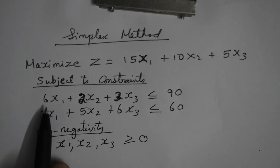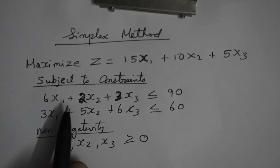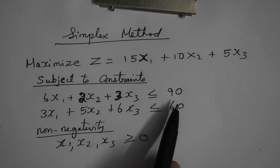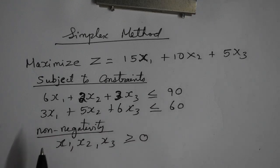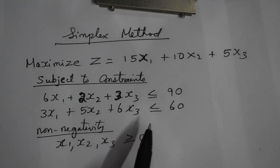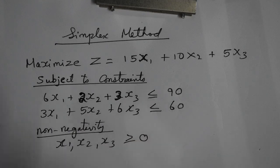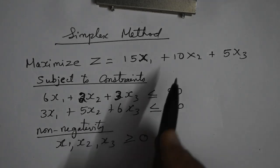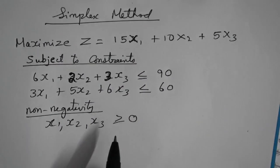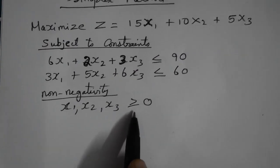The first constraint is 6x1 plus 2x2 plus 3x3 less than or equal to 90, and the second constraint is 3x1 plus 5x2 plus 6x3 less than or equal to 60. The non-negativity condition states that x1, x2, and x3 should always be greater than or equal to 0.